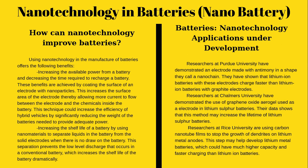Batteries — nanotechnology applications under development. Researchers at Purdue University have demonstrated an electrode made with antimony in a shape they call a nanogyne. They have shown that lithium-ion batteries with these electrodes charge faster than lithium-ion batteries with graphite electrodes. Researchers at Chalmers University have demonstrated the use of graphene oxide aerogel used as an electrode in lithium-sulfur batteries, showing that this method may increase the lifetime of lithium-sulfur batteries. Researchers at Rice University are using carbon nanotubes to stop growth of dendrites on lithium metal anodes, which may help develop lithium metal batteries with much higher capacity and faster charging than lithium-ion batteries.